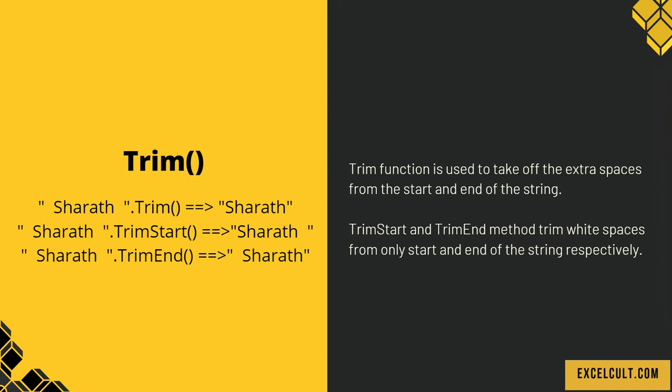Trim function is used to take off the extra spaces from the start and the end of the string. With that come two other functions: trimStart and trimEnd, used to remove white spaces only at the start or only at the end. In the examples, 'Sherath' with extra spaces at both ends — trim removes all of them, trimStart removes only the beginning spaces, and trimEnd removes only the ending spaces.